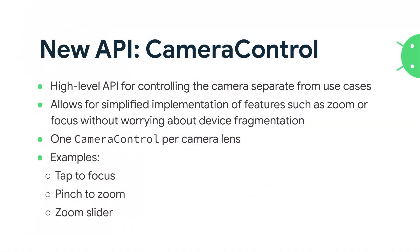Now that we've covered the basics, let's talk about the new things. The APIs I'm going to talk about are CameraControl and CameraInfo — these are high-level APIs that allow you to control the camera directly, independent of the use cases. For example, if you have a preview use case and an image capture use case, when you update the state of the camera — like the zoom, the flashlight, or other status — you should update for all the use cases. This is where you can use CameraControl.